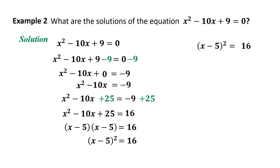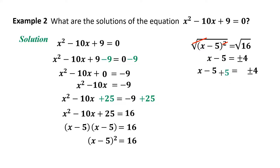We need to factor x² - 10x + 25. The factors are (x - 5)(x - 5) = 16. Simplifying, (x - 5)² = 16. The square makes the equation difficult, so we remove the square by extracting the square root, inserting radical signs on both sides. The equation becomes x - 5 = ±4, since √16 = ±4.